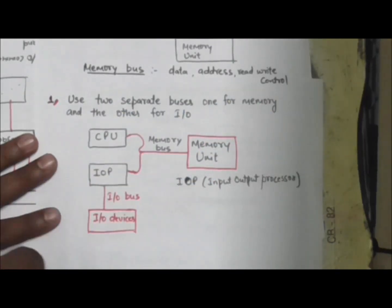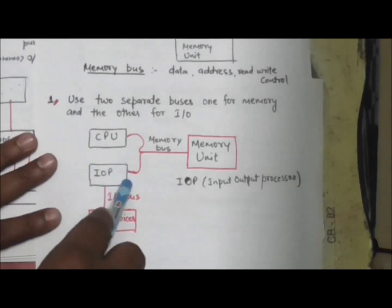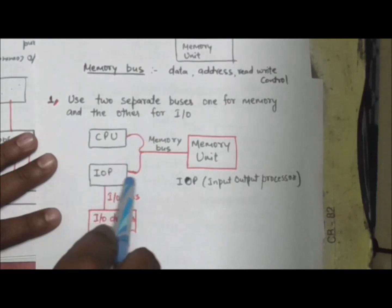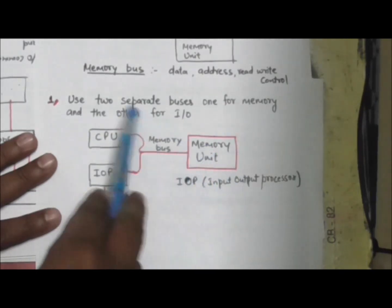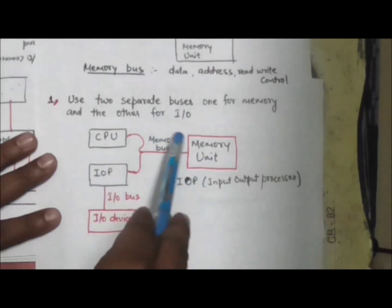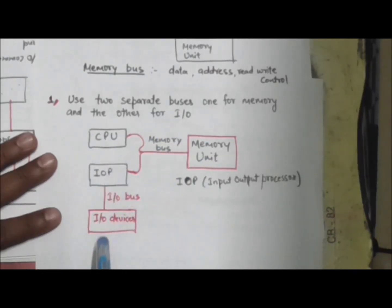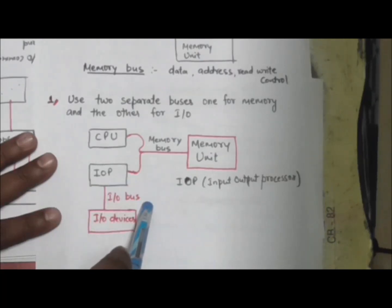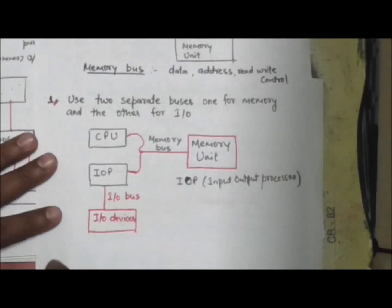The first method is using two separate buses — one for memory and the other for input-output. This method is used when the computer has a separate input-output processor in addition to the CPU. In this case, the memory unit communicates with the CPU and the input-output processor through the memory bus, and the input-output processor communicates with the input and output devices via the input-output bus. This creates an independent pathway for the transfer of information between external devices and internal memory.